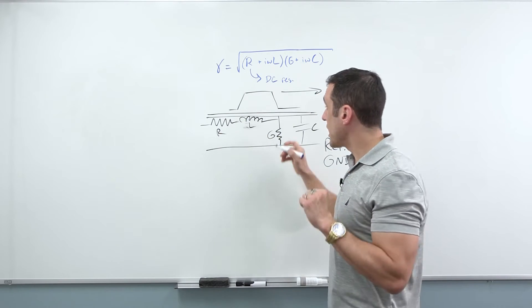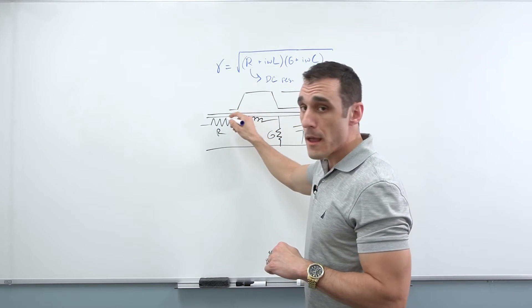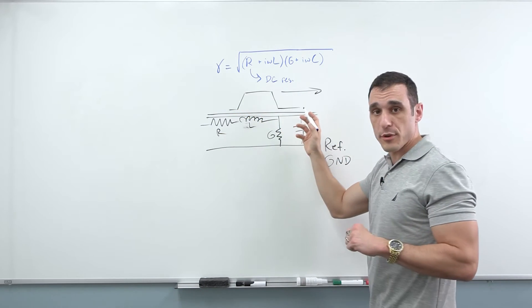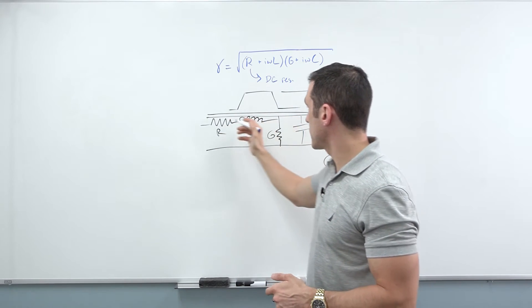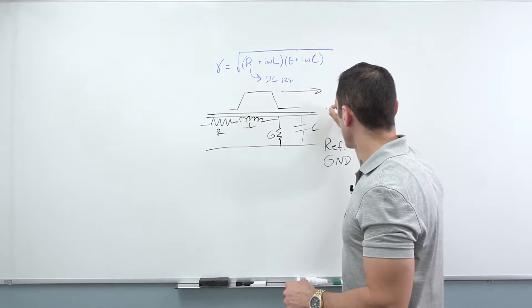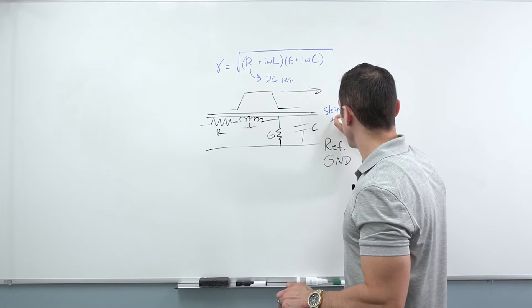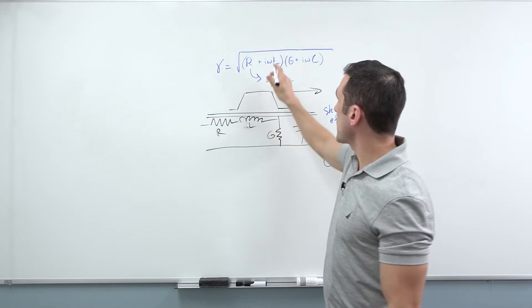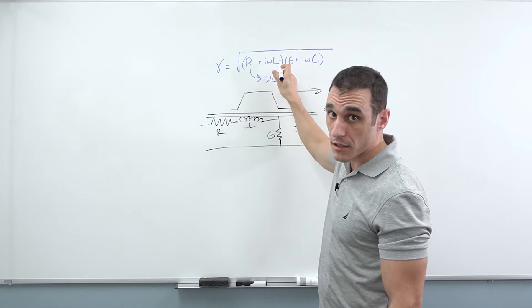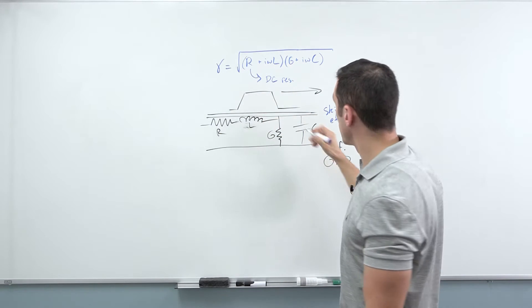Because here on this conductor, when we have high frequency propagation, meaning when there's a high frequency wave propagating on this line, we have something that happens called the skin effect.